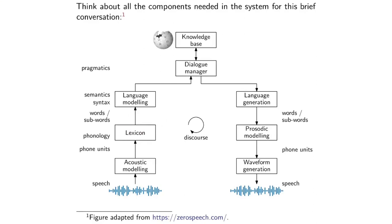A lexicon — you can think of that as a dictionary of the words in the language and how the different units are stitched together to form words. Out of this block you would get words or maybe sub-word units, and that would then get fed into a block called a language model.